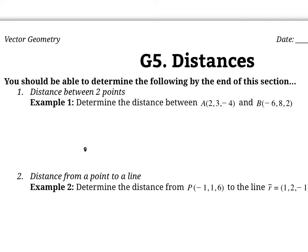If I draw a quick diagram here, call this point A and call this point B — how do we find the distance between them? We can think about AB as a vector, and then the distance between them is just the magnitude of that vector. So if we find vector AB, it's just going to be the difference between points B and A.